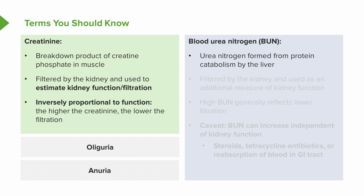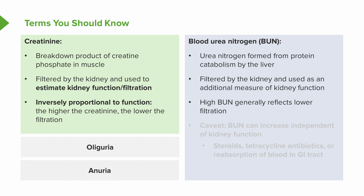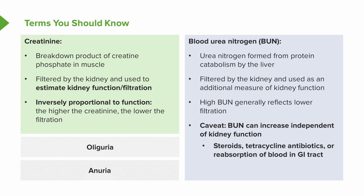You will also hear the term BUN, or blood urea nitrogen. Urea nitrogen is formed from protein catabolism by the liver. It's filtered by the kidneys and used as an additional measure of kidney function. Although a high BUN generally reflects lower filtration, there are caveats — it can increase independently of kidney function. This includes glucocorticoids or steroids, tetracycline antibiotics, or reabsorption of blood from the GI tract. In each of those instances, BUN may rise while creatinine and kidney function remain normal.